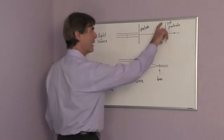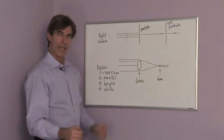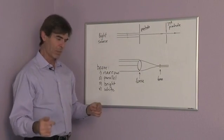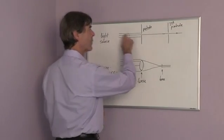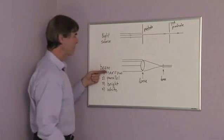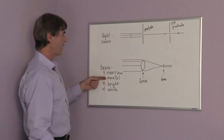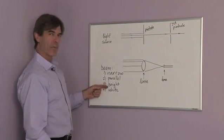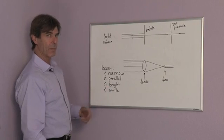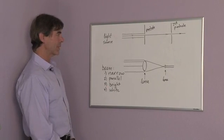It's not quite parallel. To make it parallel, we would take a second pinhole. This could be again in your shoebox, the second hole, and only light going directly through gets through. So you've made it narrow, parallel, and it's white because you're using sunlight. However, it's not very bright, and you may or may not be able to get by with this.